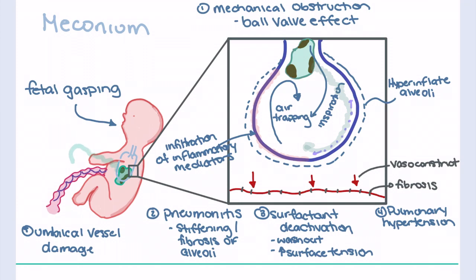As meconium comes in contact with the umbilical cord, an inflammatory response is triggered which can lead to inflammation and fibrosis of the cord itself.